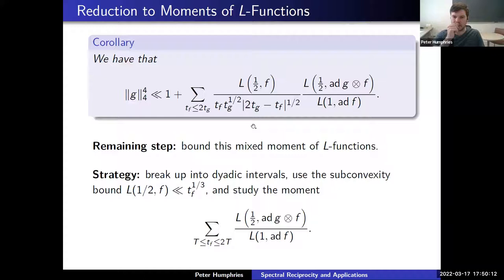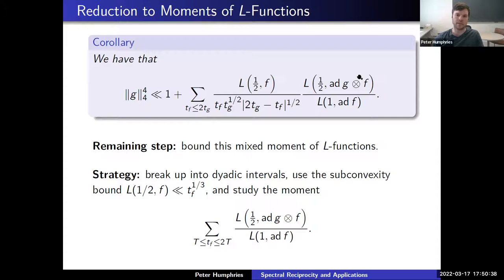The spectral parameter TG is the square root of lambda_G minus 1/4, and TF is the square root of lambda_F minus 1/4. Using Stirling's formula, this polynomial contribution times something that exponentially decays once TF is large compared to TG. The triple product on top factorizes into a degree-two L-function times a degree-six L-function — a GL(3) × GL(2) Rankin-Selberg L-function. The upshot: when we look at the L⁴ norm, we get a main term contribution and a spectral sum over Maass forms with spectral parameter smaller than 2TG — after this point we have exponential decay — times L(1/2, F) times things in terms of the spectral parameters, times this GL(3) × GL(2) L-function weighted by the adjoint L-function. We need to bound this moment of L-functions.